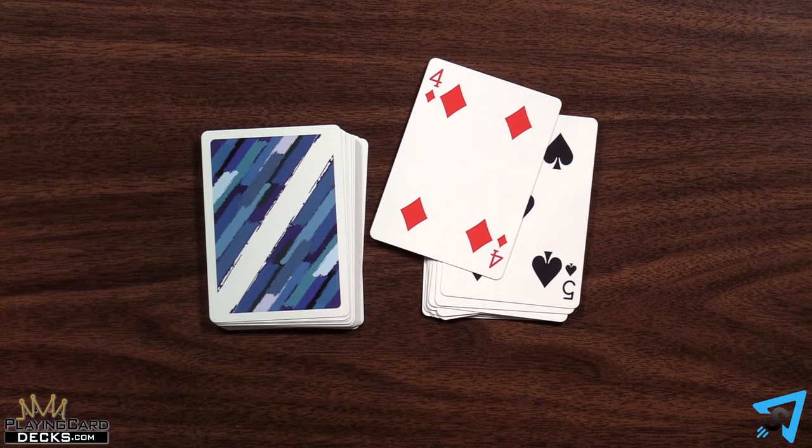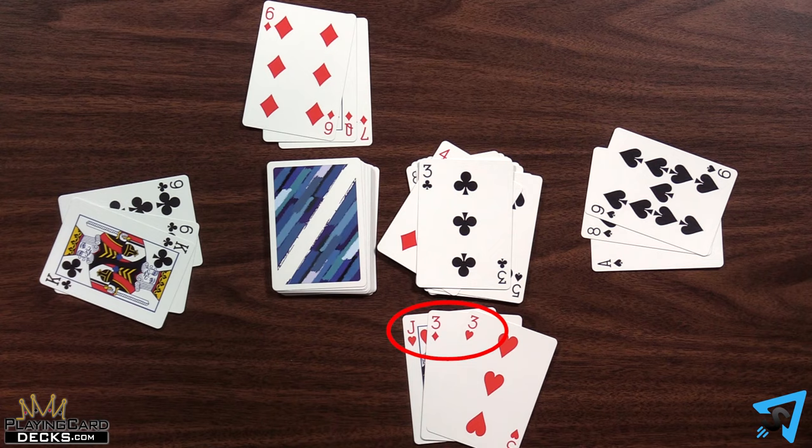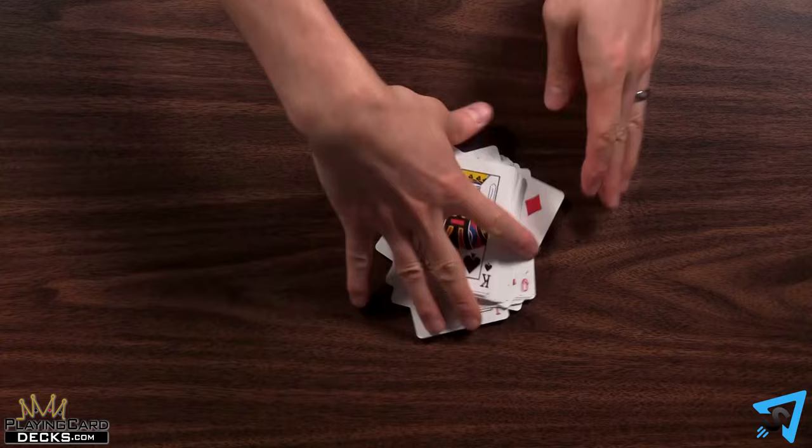Once it gets back to you, all the players reveal their hands and the player with the lowest score loses one life. Gather up all the cards and the role of dealer rotates clockwise by one, and you play another hand.